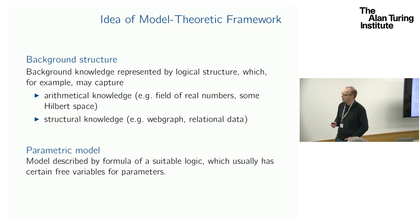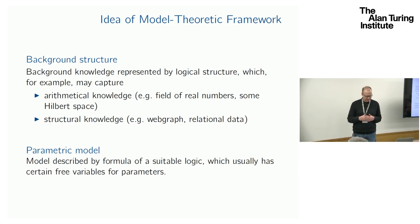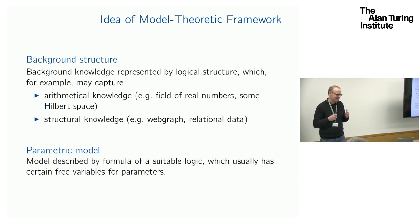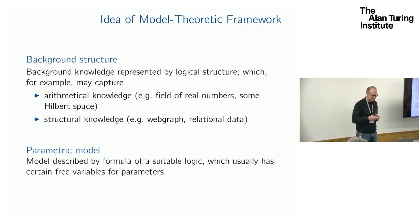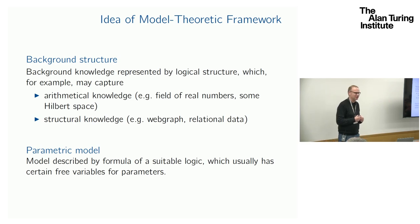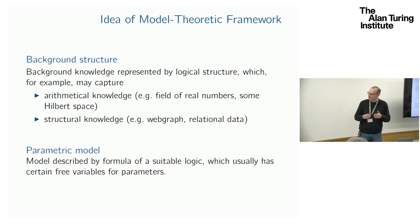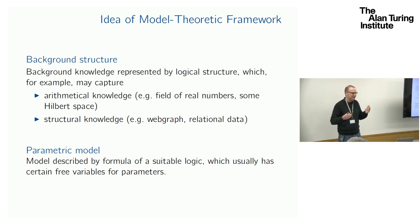The background knowledge is in a structure, and the model we generate is described by a formula of a suitable logic. Usually we have some free variables there which would be our parameters. So we have parametric models, and we leave it completely open at the moment what logics might be used. I think that's an important question — to find good logics to describe the models you're interested in. I'm just starting within logics I know and know how to deal with, like first-order logic, and I get somewhere there, but that should not be the end.